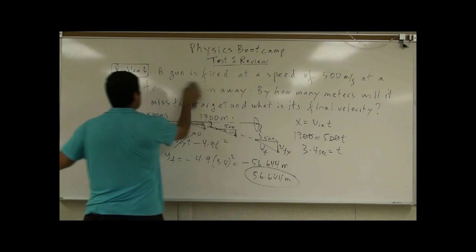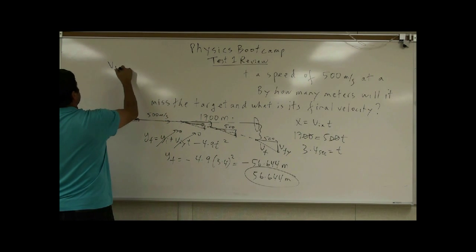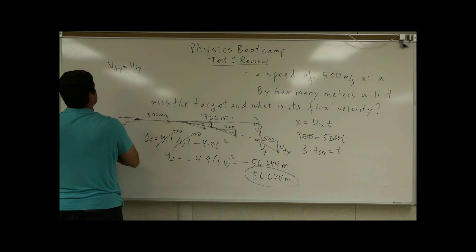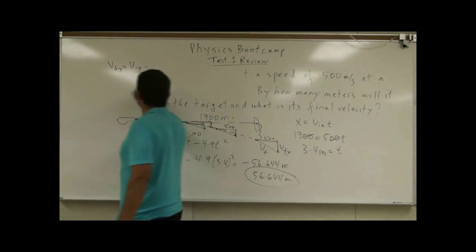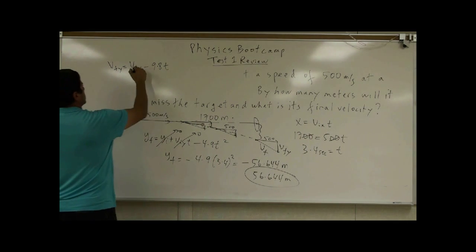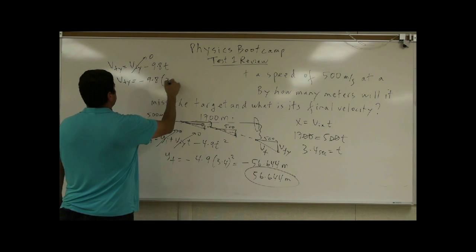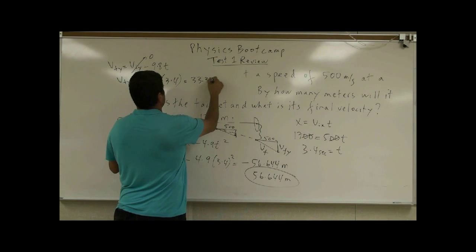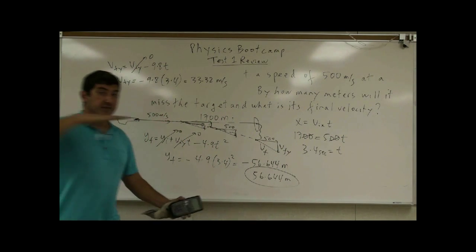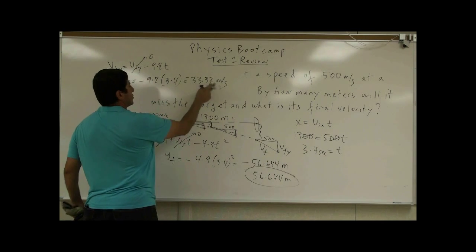I could use the first equation of projectile motion: V-final-Y equals V-initial-Y minus 9.8 times T. The initial Y velocity is zero — you shot it horizontal. So V-final-Y equals negative 9.8 times 3.4 seconds. Taking that product gives us negative 33.32 meters per second. The negative means it's going downward.